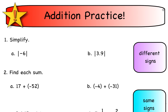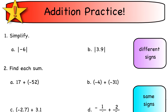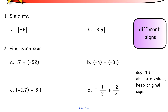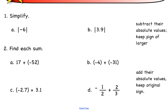Let's practice. Remember: same sign, add the absolute values and keep the sign; different signs, subtract the numbers and keep the sign of the bigger number. What is the absolute value of negative six? That's the distance from zero on a number line, and it's always positive. Whether it's a decimal, a fraction, or a whole number, the positive value comes out.